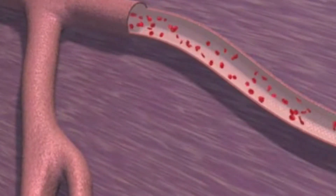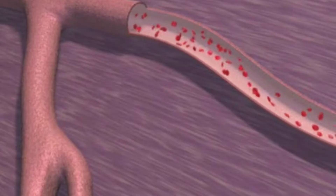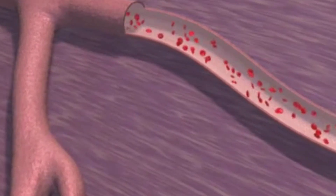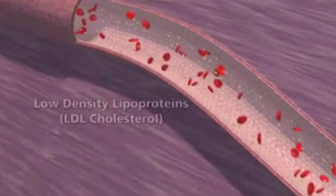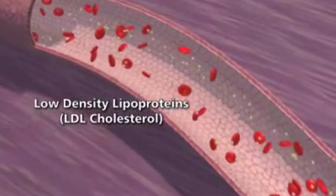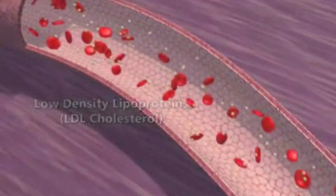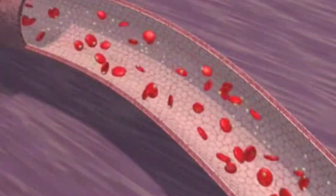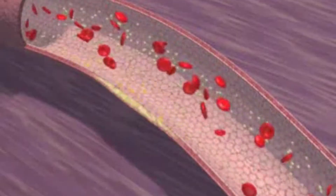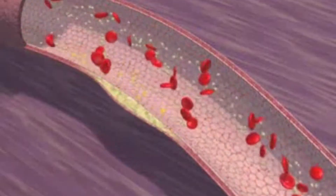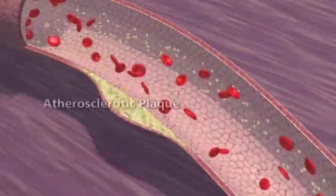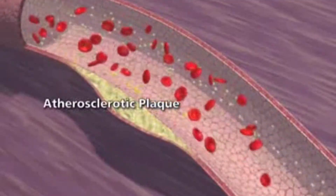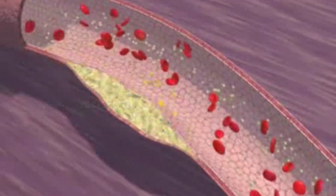The bloodstream also contains fats or lipids known as low-density lipoproteins or LDL cholesterol. Atherosclerosis begins when LDL cholesterol accumulates in the arterial wall, forming a plaque. Over time the plaque becomes larger.